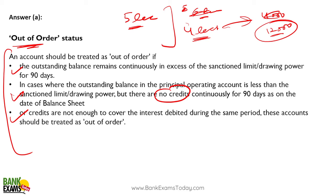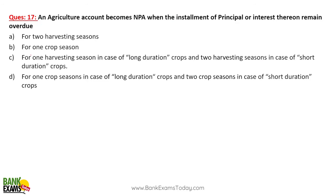So there are three cases when an account becomes out of order: the outstanding balance continuously exceeds the sanctioned limit; there are no credits at all; or credits are not sufficient to cover the interest cost — meaning even the money deposited does not cover the interest charges on the CC account.